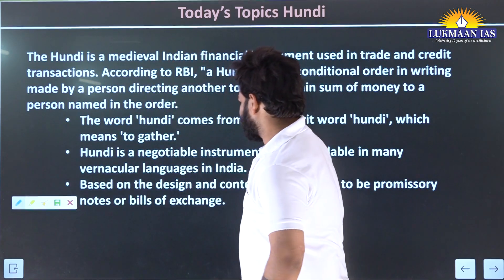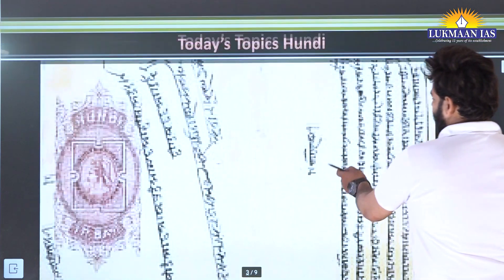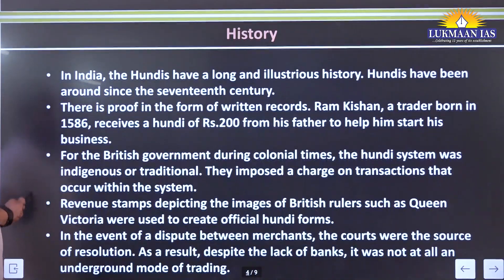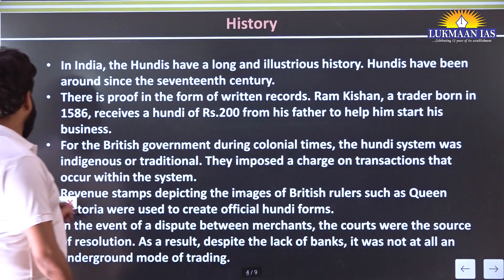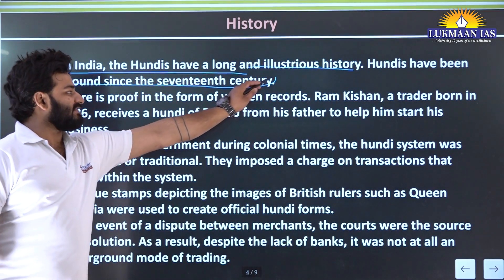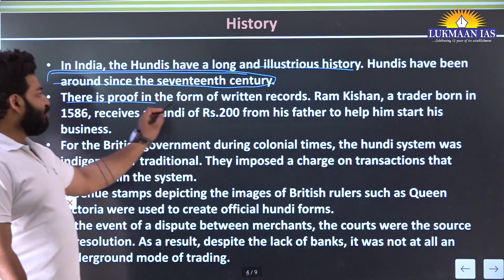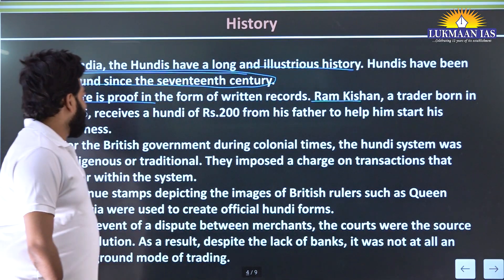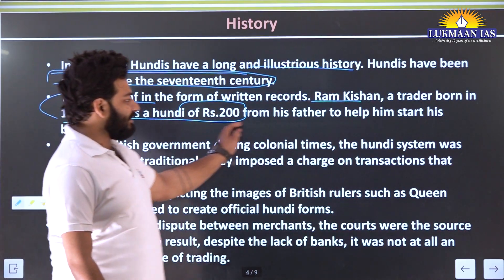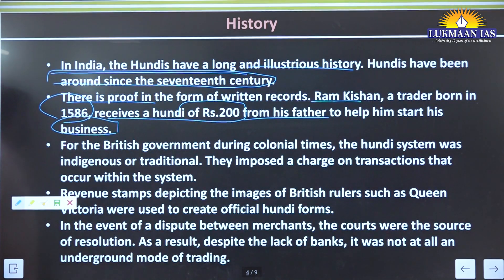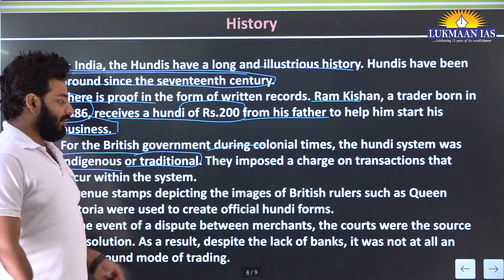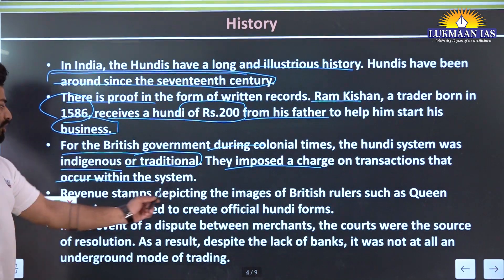In India, Hundis have a long and illustrious history - they have been around since the 17th century. There is written record proof: Ramkishan, a trader born in 1586, received a Hundi of rupees 200 from his father to help start his business. During British colonial times, the Hundi system was considered indigenous or traditional, and the British government imposed a charge on transactions occurring within the system.